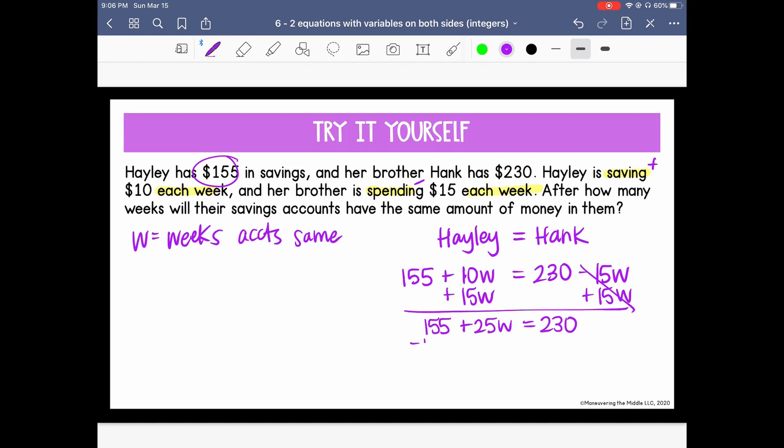We now need to subtract 155. So 25W equals, the difference here is 75. Lastly, let's undo the multiplication. So divide by 25. W is 75 over 25, which is 3.